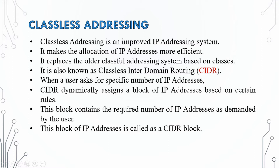Now we can see Classful Addressing, which is class-based. We are going to replace it with Classless Inter-Domain Routing, which is CIDR. If we have a specific number of IP addresses, then we are going to use CIDR. CIDR assigns a block of IP addresses based on rules, and the block contains the required number of IP addresses demanded by the user. This block of IP addresses is called a CIDR Block.